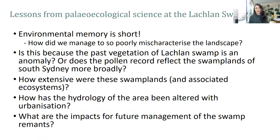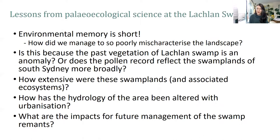This raised a couple of interesting questions. Environmental memory can be incredibly short, even within heavily populated areas — which raises the question of how we managed to so poorly mischaracterise this landscape, which today is protected under environmental legislation. Is the past vegetation at the swamp an anomaly, or does the pollen record reflect the swamplands of South Sydney more broadly? How extensive were these swamplands across space? Were they continuous across the area? And if so, how has the hydrology been altered with urbanisation? And ultimately, what do all of these questions mean for the future management of these swamp remnants?